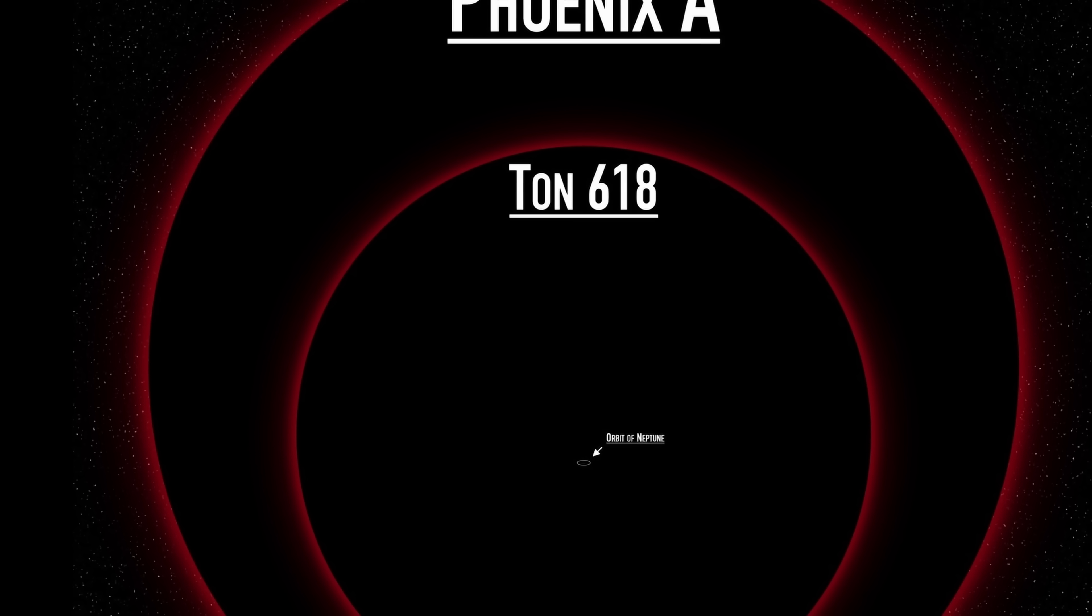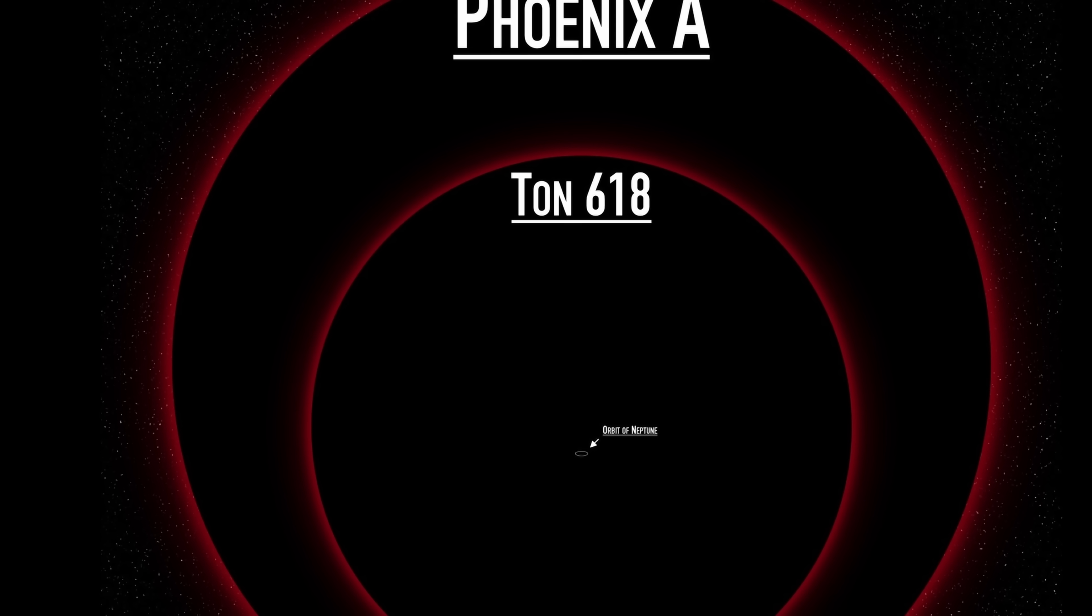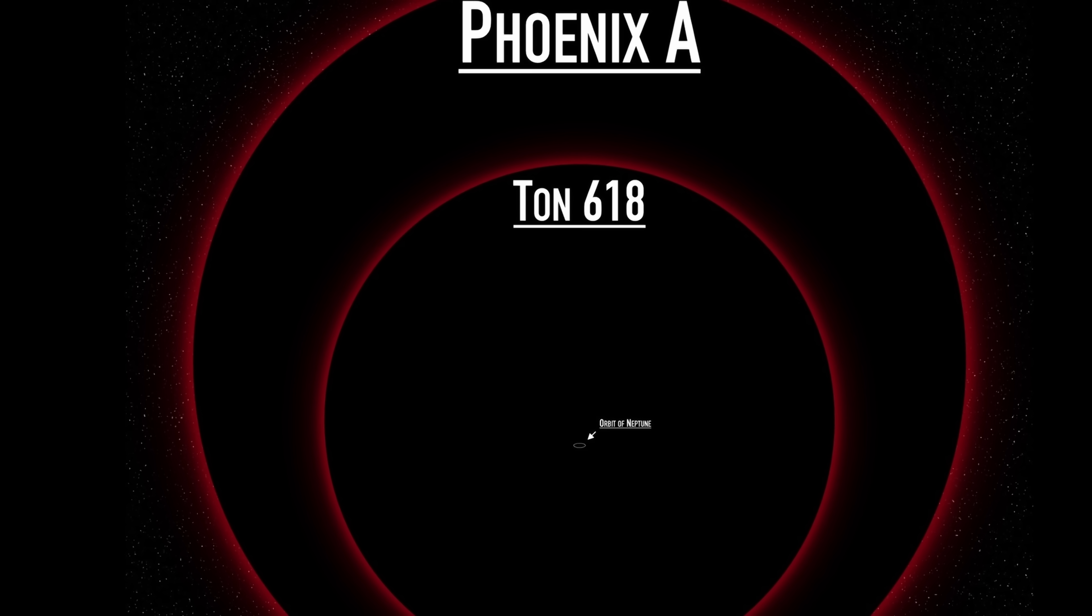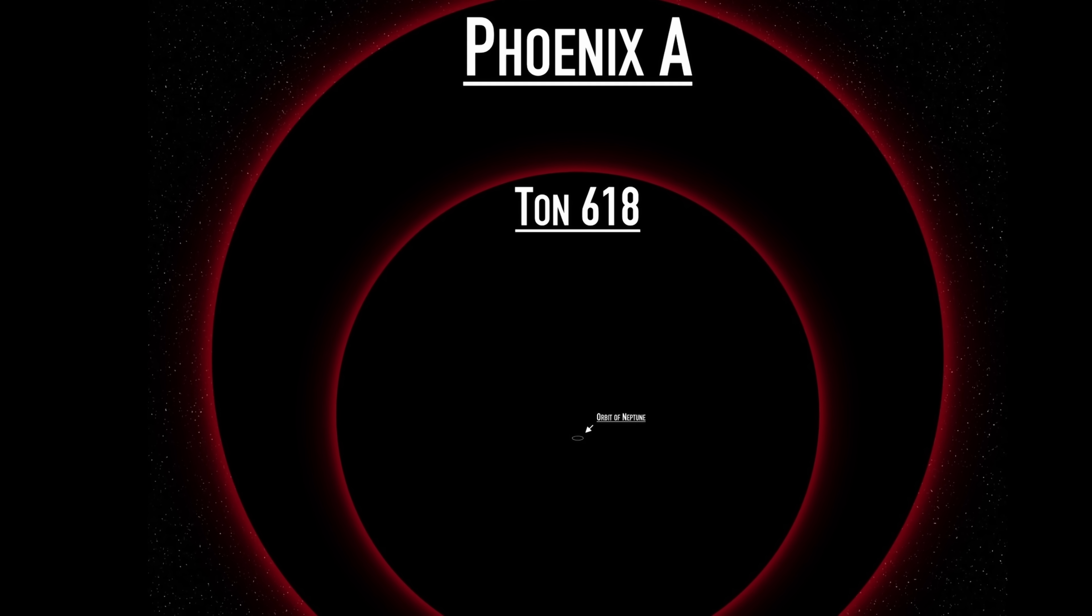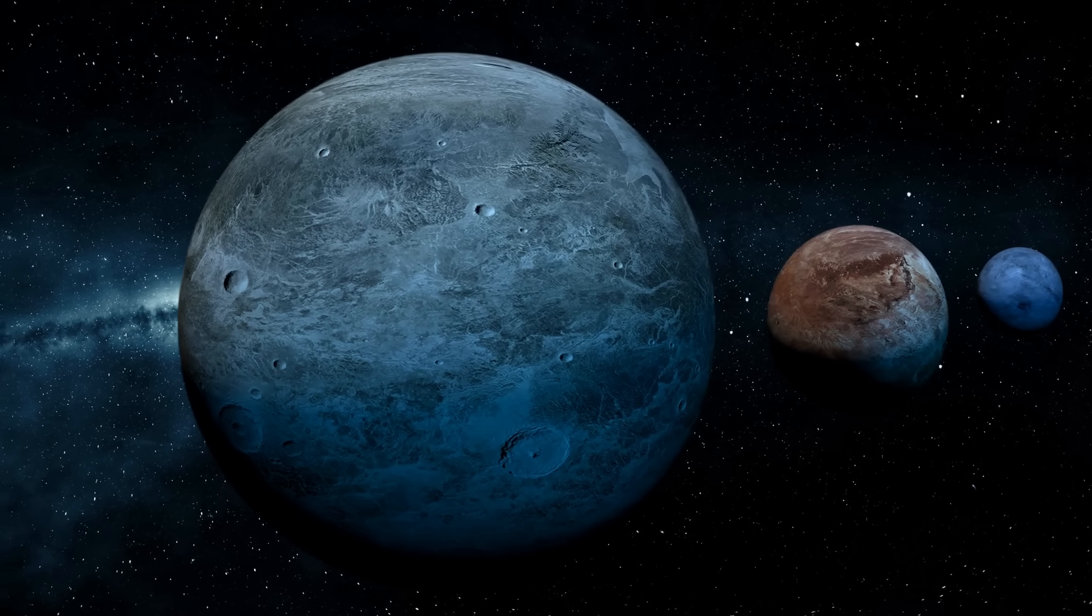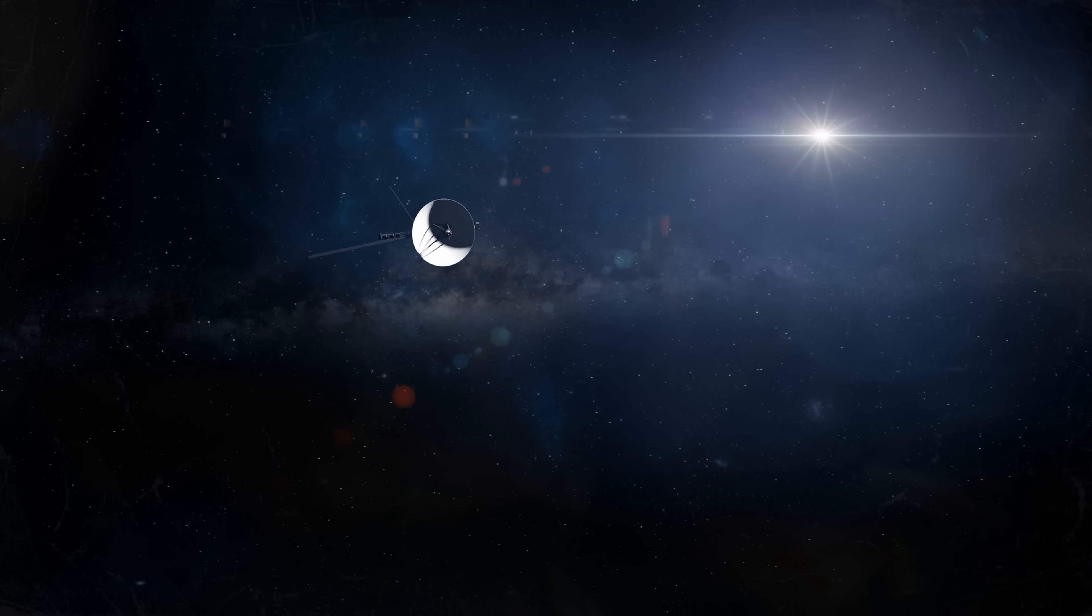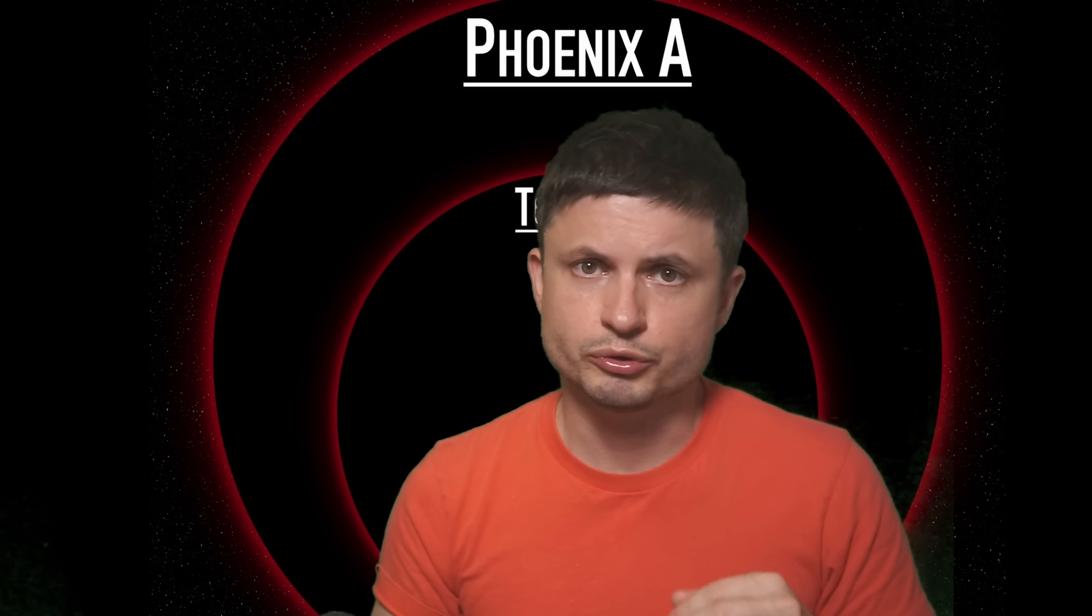With the size of the event horizon being very similar to Ton 618 at approximately 1300 astronomical units. Way past the orbit of Pluto and nearly 10 times as far away as the Voyager probes. And also almost at that absolute limit of what the scientists believe supermassive black holes should be, which is actually about 50 billion solar masses.